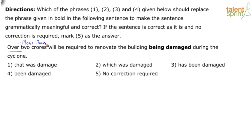Over two crores will be required to renovate the building being damaged during the cyclone. Let's quickly look at our options and understand what we can eliminate and what we need to retain. Option one is 'that was damaged.' This is almost in a passive construction, which means 'damage' is not in the right form.